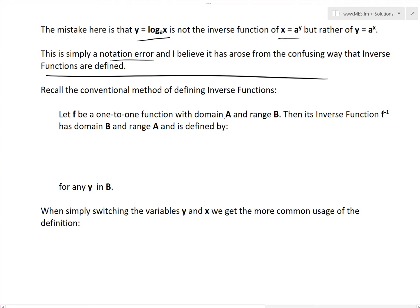So this function has a domain a and a range b, then its inverse function f with a negative one superscript has domain b and range a. So basically, all we're doing is switching the x and y axis.